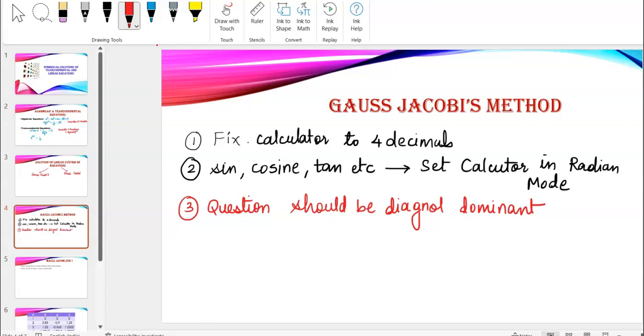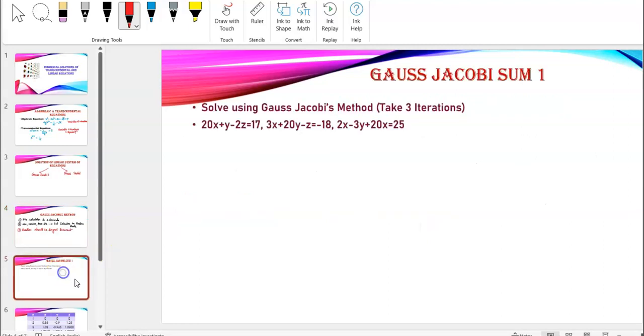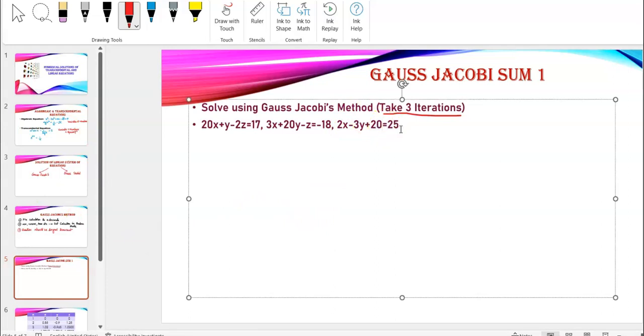So, let's understand the method with the help of an example. The question is, solve using Gauss Jacobi's method. And the question limits you to three iterations. Now, let's look at the question here. I have 20x plus y minus 2z equals 17. 3x plus 20y minus z equal to minus 18. And 2x minus 3y plus 20z equals 25.